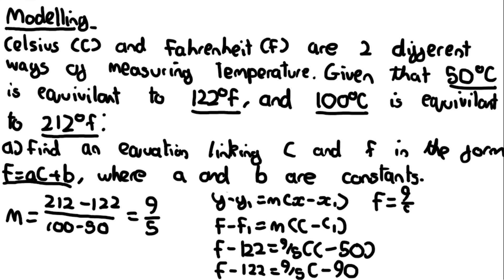Then we can rearrange this into the form said here. We can do f equals 9 over 5 c minus 90 plus 122 which is going to be equal to plus 32. Therefore this is the equation in the form f equals ac plus b. Note that it doesn't say anything about a and b having to be integers so we leave it in this form.